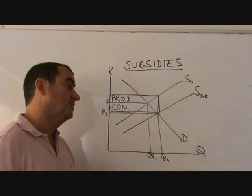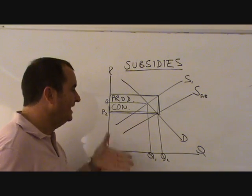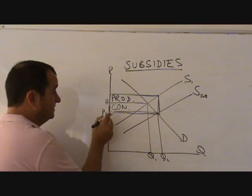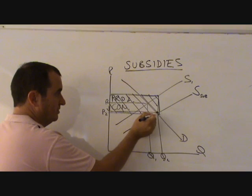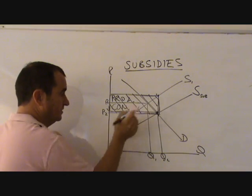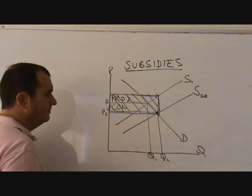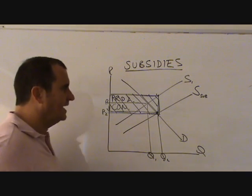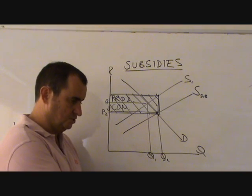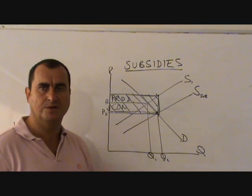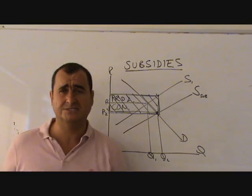And how much they have to relinquish and pass on as a price drop. But the cost of the subsidy to the government is this entire area, which is from the new equilibrium point, the vertical distance between the supply curves, the subsidy per unit, times the number of units being sold. It's a bit like with tax. With tax, you calculate the burden between consumers and producers by going to the new equilibrium point and looking at the vertical distance between the supply curves. In that sense, it's just like with taxes.